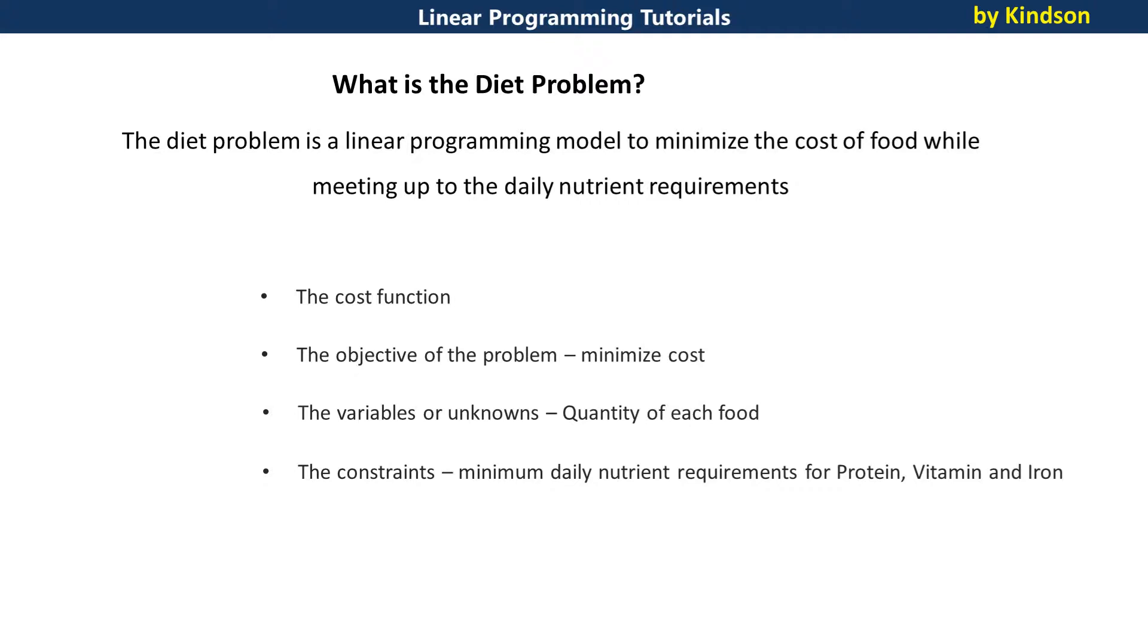In this problem, we are going to identify the cost function, we are going to identify the objective, which is to minimize cost, the variables or the unknowns are the quantity of each food you need to eat, and then the constraints are daily minimum nutrient requirement for protein, vitamin, and iron. So let's quickly see the table.